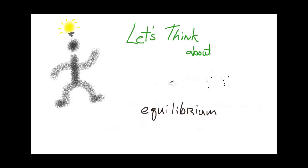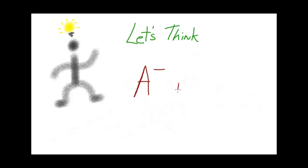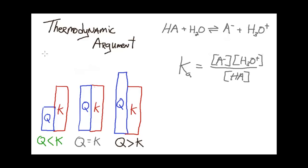We're going to be focusing on a solution that's a weak acid at constant temperature and be asking the question, how does the pH change if certain species are added. To build a thermodynamic argument for describing what happens to the pH and the concentrations of the various species in this reaction, we're going to focus in on the equilibrium constant expression.